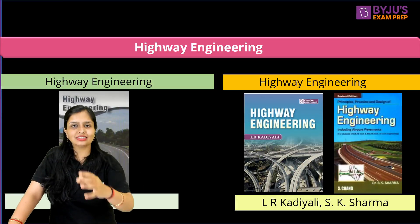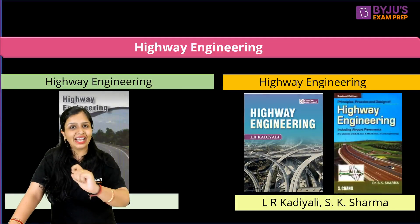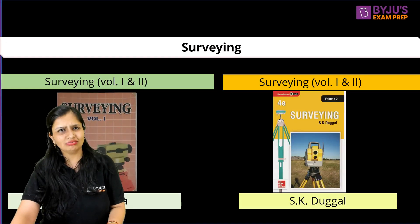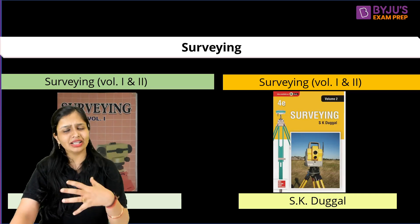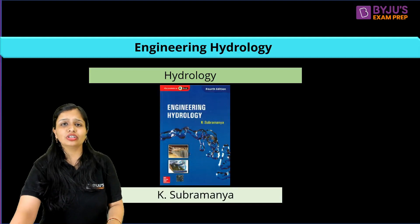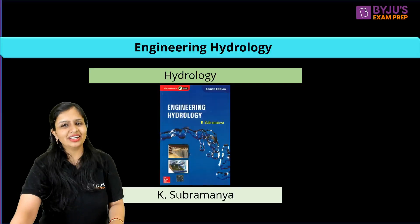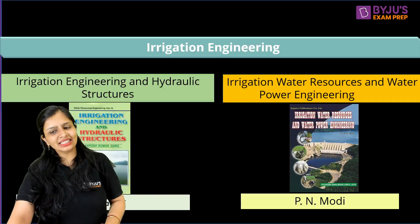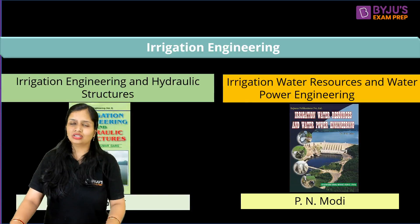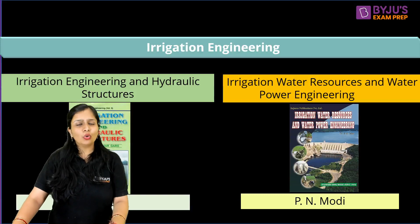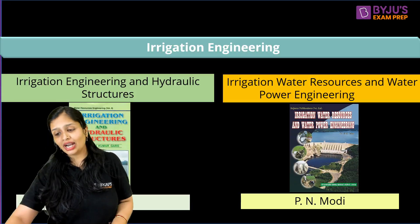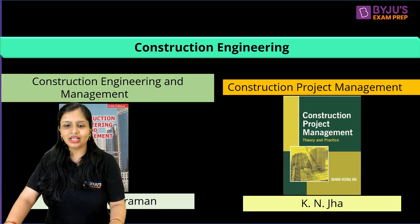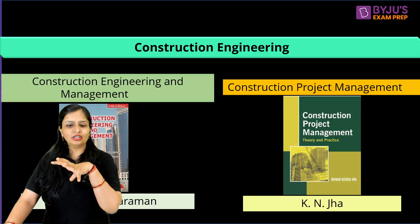For Highway Engineering, I love Justo and Khanna — the way they explain things is very clear and easy. For Surveying, BC Punamia and SK Duggal are both fine. For Engineering Hydrology, without a second thought go for K. Subramanyam. For Irrigation, both SK Garg and P.N. Modi are good, but check the year of publication because some codal provisions have changed — look at the printing year before purchasing.